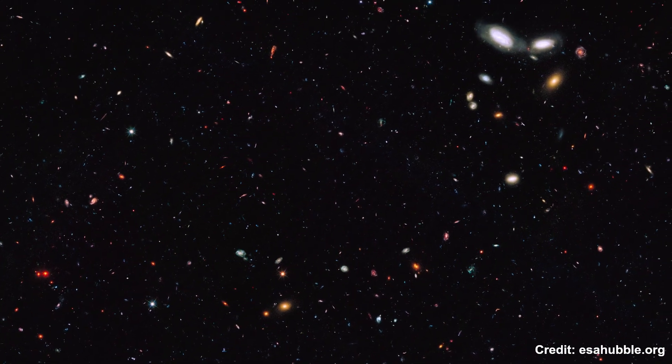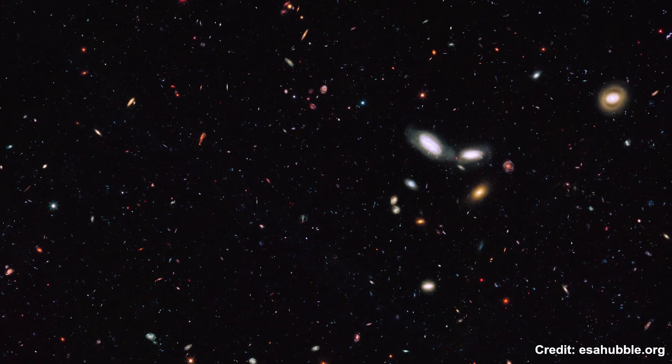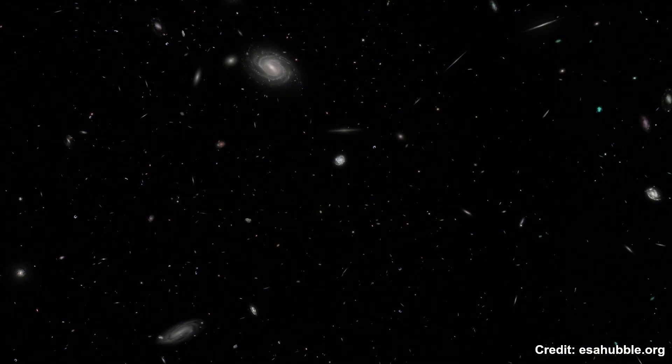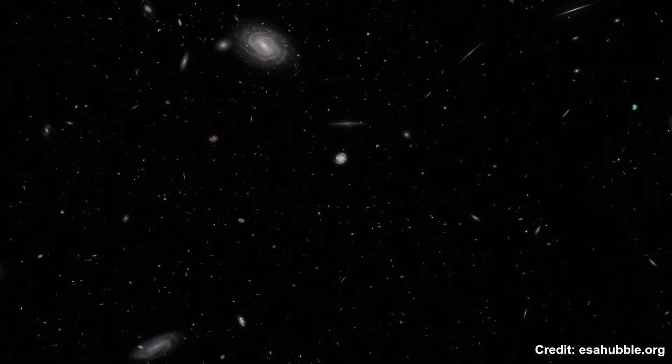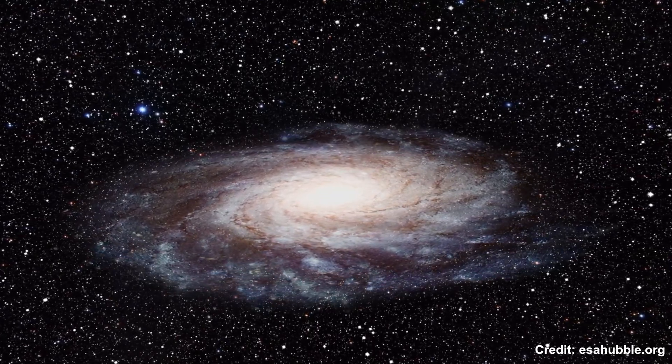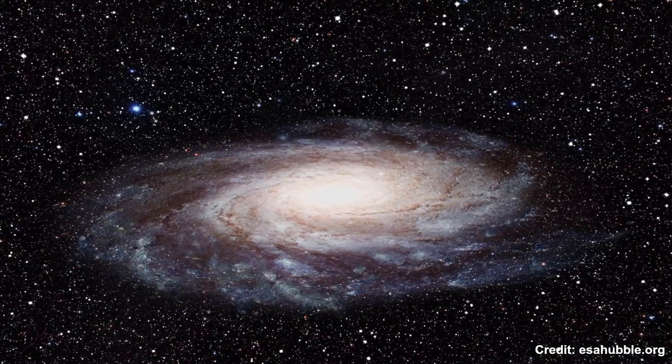First, let's define what a galaxy is. A galaxy is a gravitationally bound system of stars, stellar remnants, interstellar gas, dust, and dark matter. Galaxies range in size from dwarf galaxies with a few billion stars to giants with hundreds of billions of stars. They come in various shapes: spiral, elliptical, and irregular.